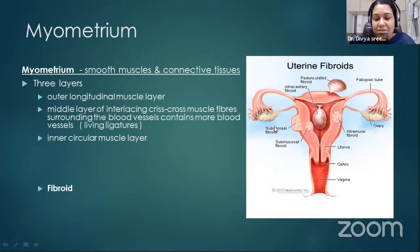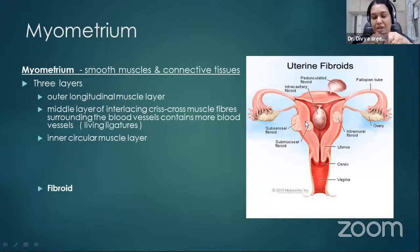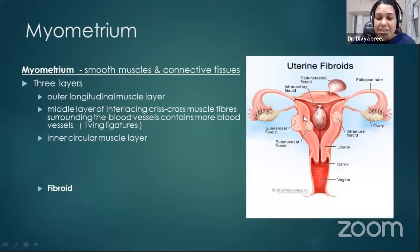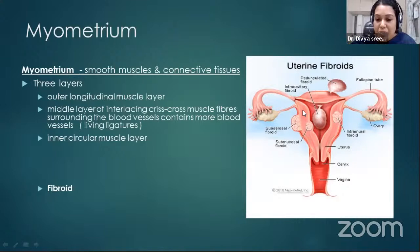The myometrium is the middle muscular layer, containing outer longitudinal muscles and middle interlacing (crisscross) muscles with many blood vessels in between. When the uterus contracts during normal labor or menstruation, bleeding is stopped — this is known as the 'living ligatures.' The inner layer is circular. Clinically, fibroids arise from the myometrium and are classified as submucosal, intramural, and subserous.